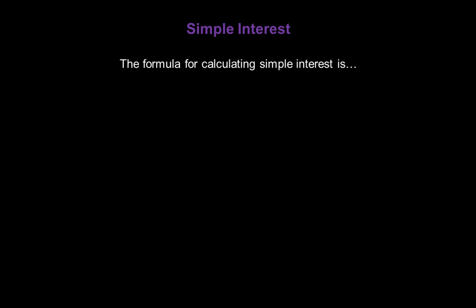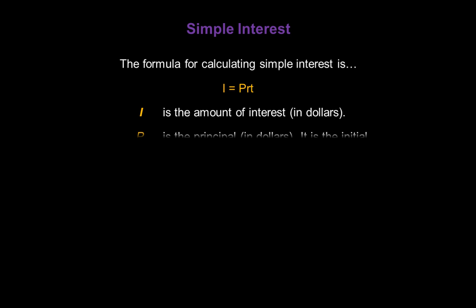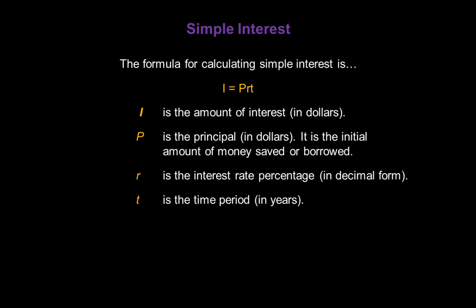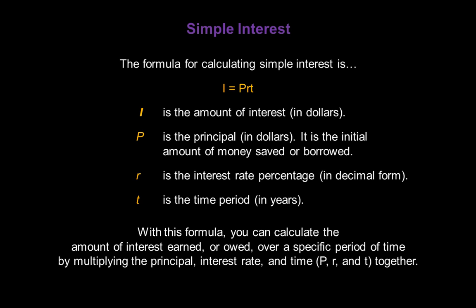The formula for calculating simple interest is I equals PRT. I is the amount of interest in dollars. P is the principal in dollars — it's the initial amount of money saved or borrowed. R is the interest rate percentage, always in decimal form. And T is the time period, always in years. With this formula, you can calculate the amount of interest earned or owed over a specific period of time by multiplying the principal, interest rate, and time — PRT — together.